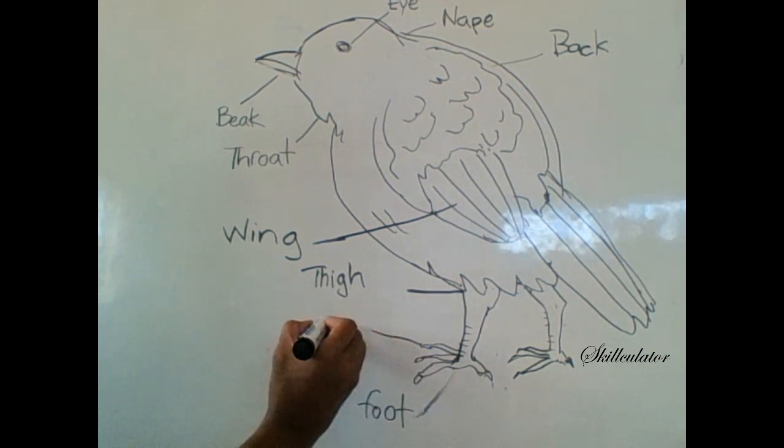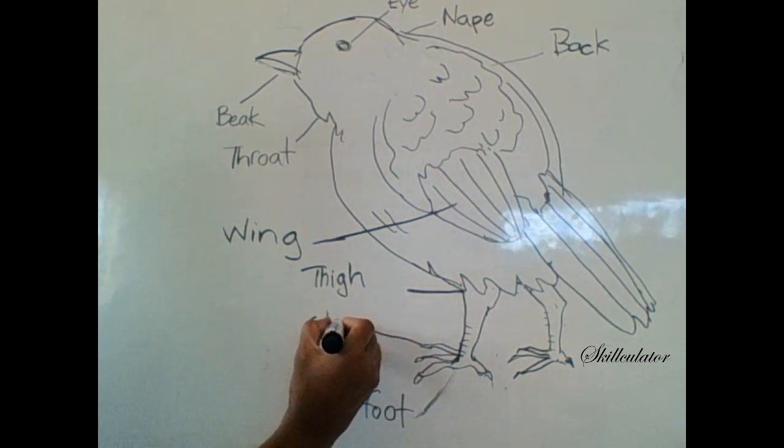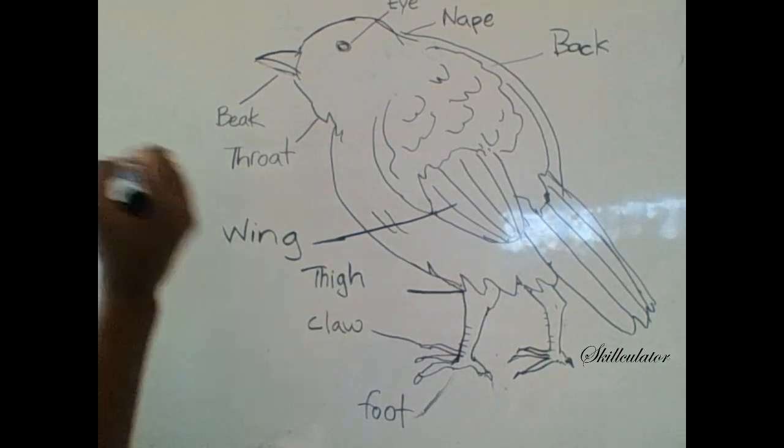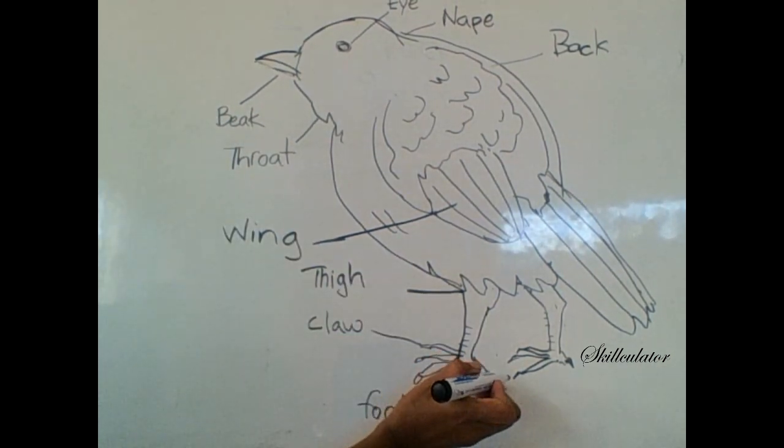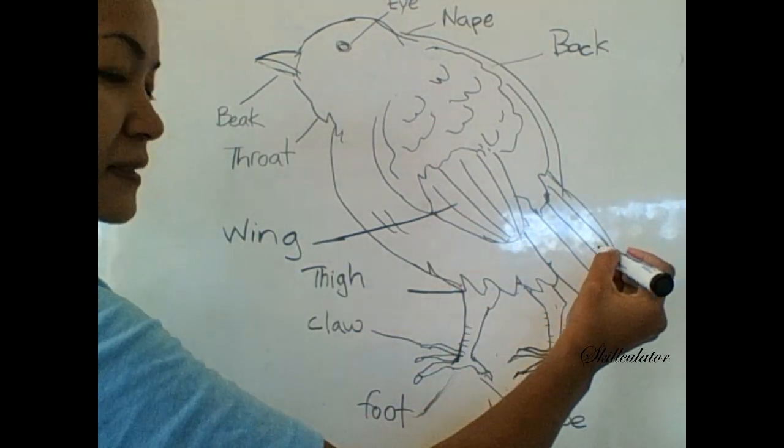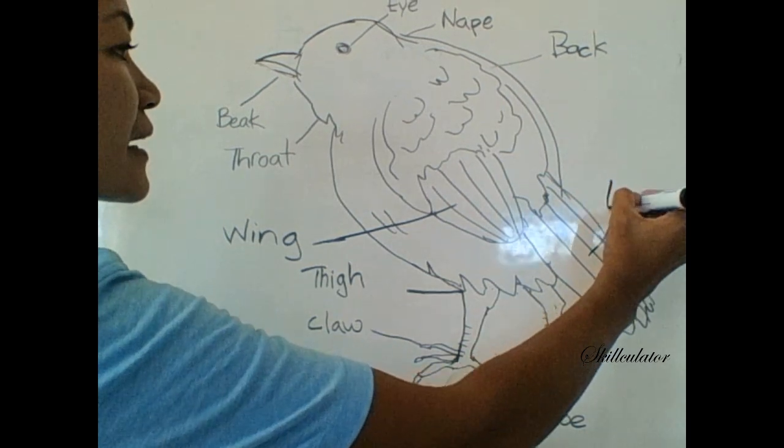That's the claw. This here is the hind toe. And this of course is the tail.